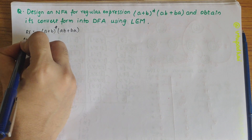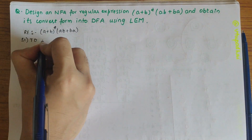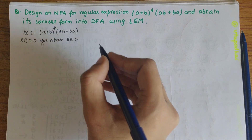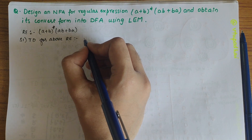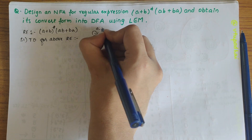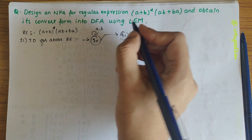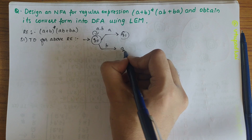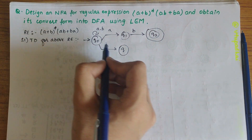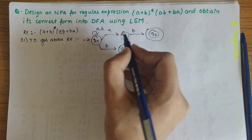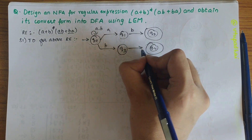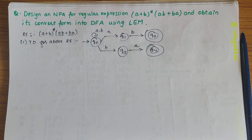Our first step is to draw the transition diagram for the above regular expression. Starting from Q0: Q0 on A gives Q1. (A+B)* means a self-loop, then AB is taken on the first instance. On the second instance, (A+B)* self-loop, BA is there — so on B it gives Q3, and on A it gives Q4. So we have obtained the NFA transition diagram.